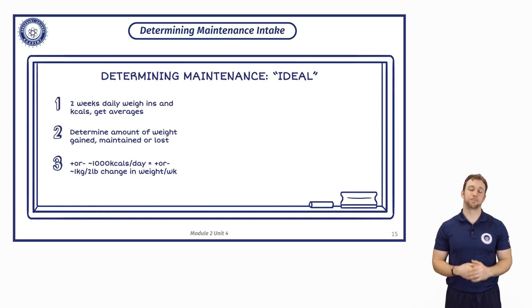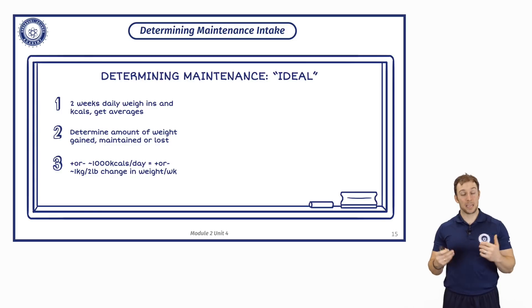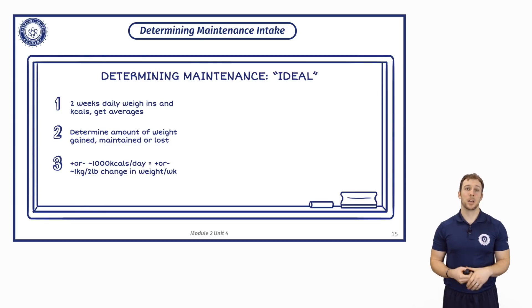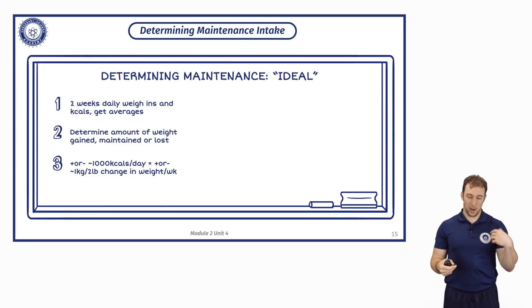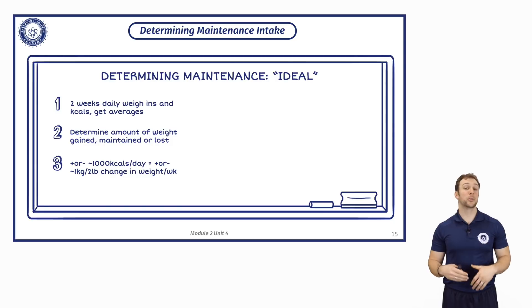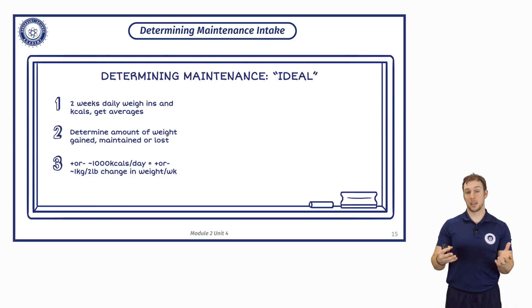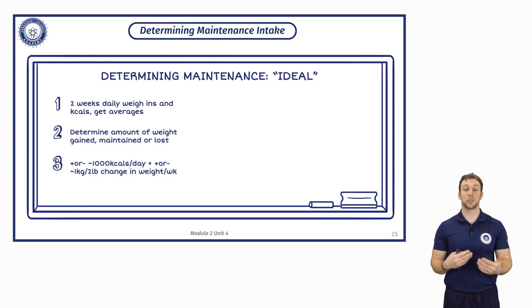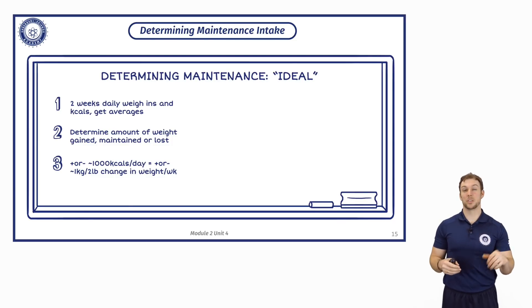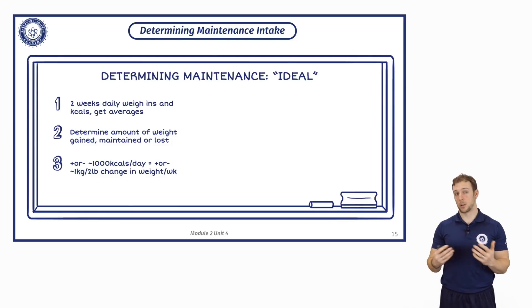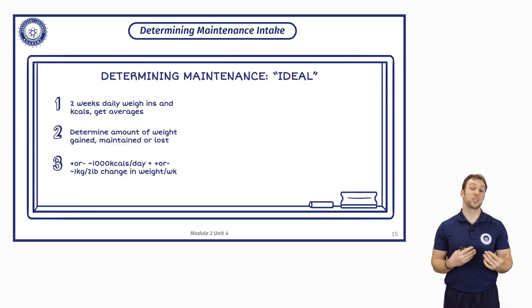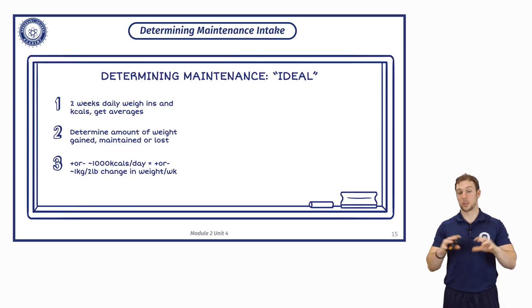What you need is at least two weeks of daily weigh-ins and calorie tracking. All they need to do is track their food and their body weight. Then you get seven-day averages for each week. This way you can determine the amount of weight gained, maintained, or lost and see the relationship with food intake. Roughly 3,500 calories is equal to about one pound of body fat — we can use this as a rough estimation that's more accurate than just using an equation.